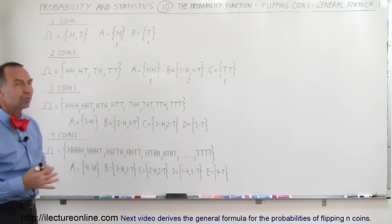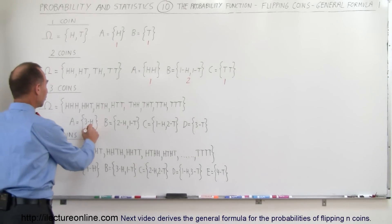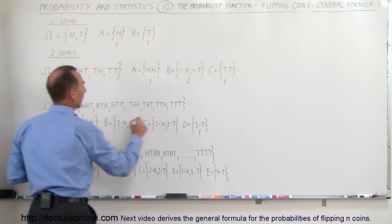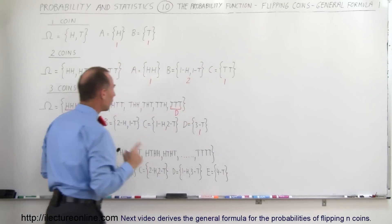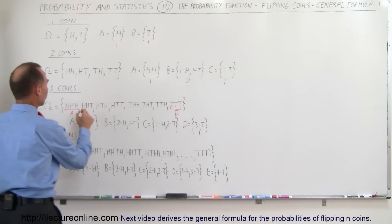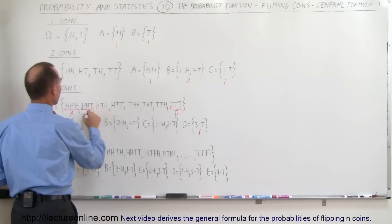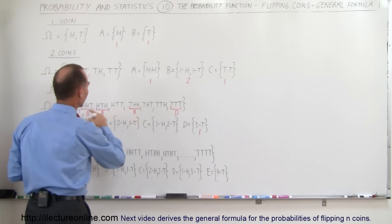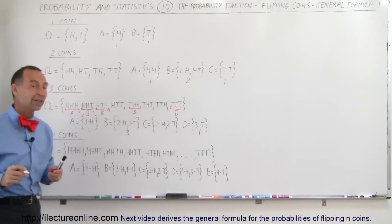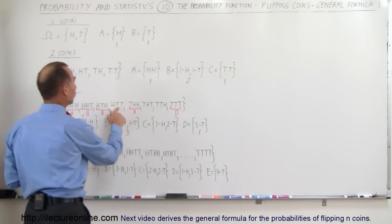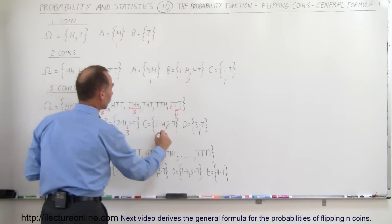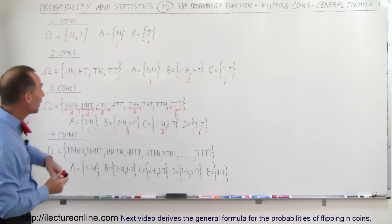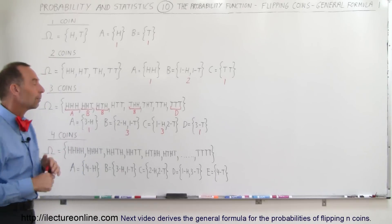How many possible outcomes are there in each case? There's only one for three heads and one for three tails. But for two heads and one tail, there are three different outcomes — that's three elements in event B. And for one head and two tails, there are also three elements in event C. They all add up to one, three, three, one — and when we add them all up we get a total of eight outcomes filling up the sample space.